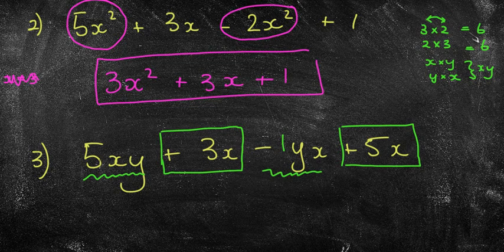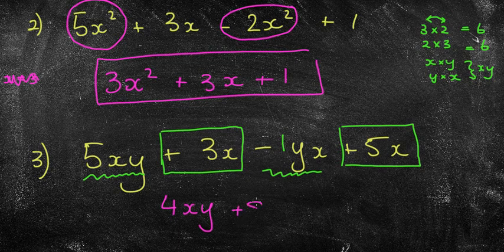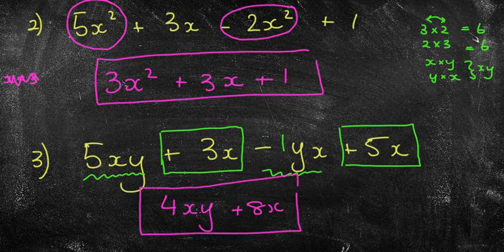Which means if I do this I've got 5 subtract 1 which is 4xy. You can put yx if you want but x comes before y in the alphabet so I'm going to do it that way. And plus 3x plus 5x is plus 8x. Beautiful. That's my final answer. Once again I can't add them together because I've got an xy and an x which means that they are not like terms. These are not like terms. So when you're adding and subtracting you can only add and subtract like terms.